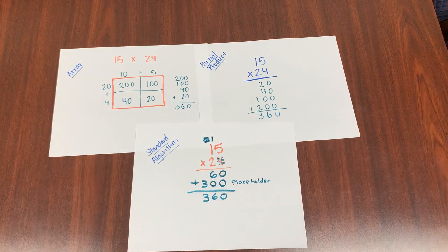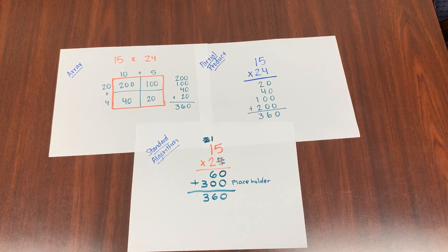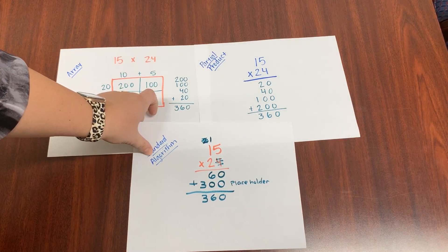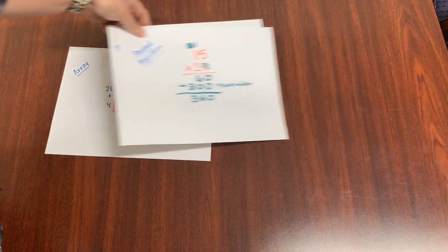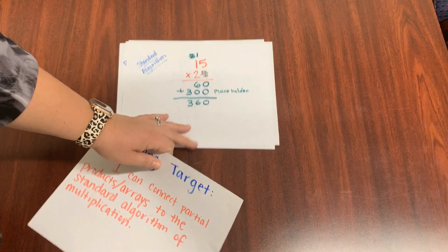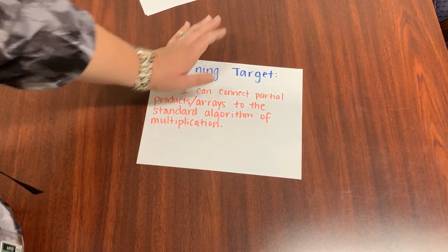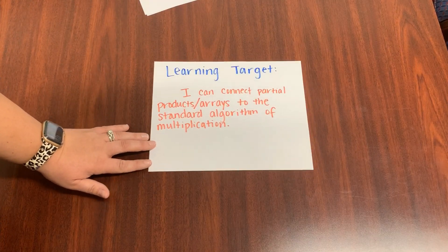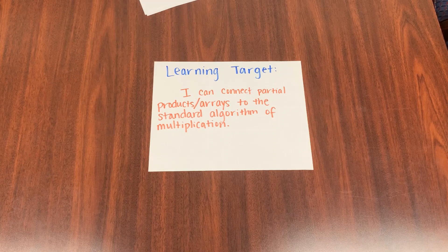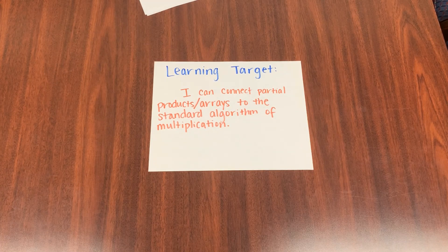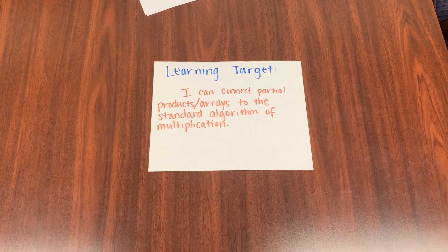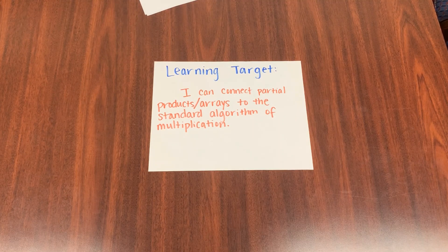Rewatch the video if you need to at any point to help you better understand. You're also going to be working with word problems. This was just to help you build the skill. But we are going to be making sure that we use word problems from here on out. And please remember your learning target. Let's see if we met it today. I can connect partial products and arrays to the standard algorithm of multiplication. Think back and reflect to see if you feel like you have mastered that. If you haven't, feel free to rewatch this video.